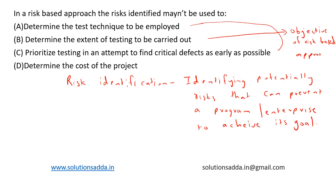Whereas 'determine the cost of the project' is not an objective of risk identification. So in a risk-based approach, the risks identified may not be used to determine the cost of the project. Option D is the correct answer.